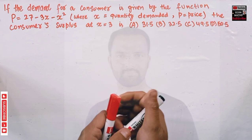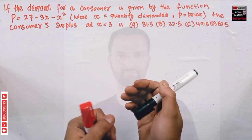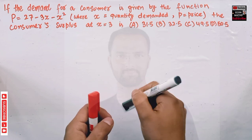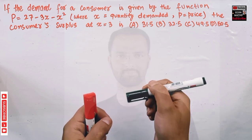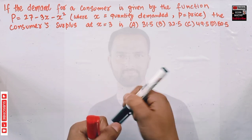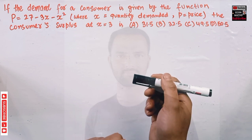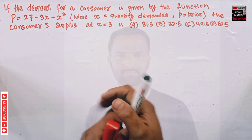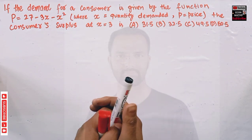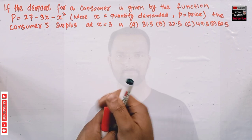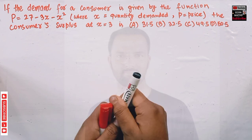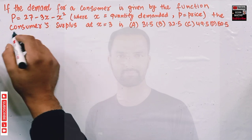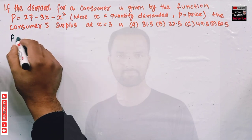What is consumer surplus? Consumer surplus is the difference between the consumer's willingness to pay for a product and the actual price they pay. That difference is called the consumer surplus. Let's first write our demand function and then I will show you mathematically how to calculate it.